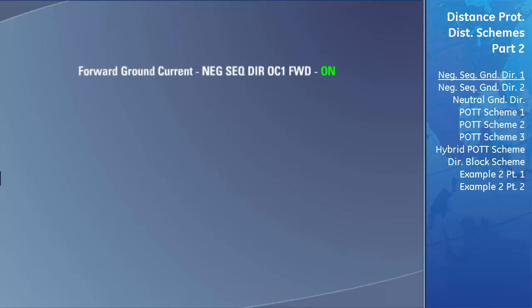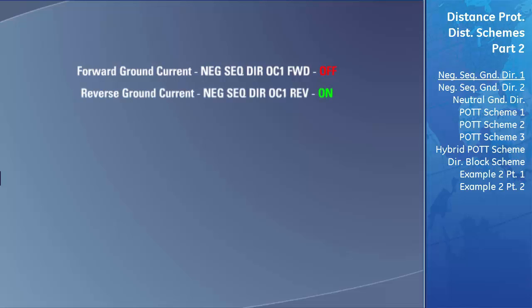The advantage of the negative-sequence-directional overcurrent element is that it can be used to detect the direction of ground currents on paralleled transmission lines. It has two separate independent functions: one for detecting ground current flowing in the forward direction and one for detecting ground current flowing in the reverse direction. When forward ground current is detected, it turns on the negative-sequence-directional overcurrent 1 forward element flag; when reverse is detected, it turns on the reverse element flag.